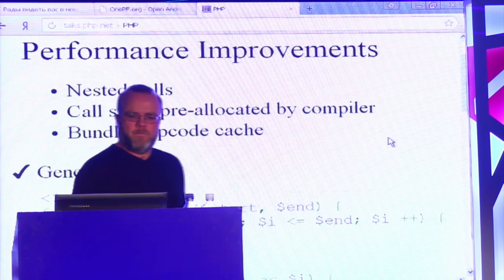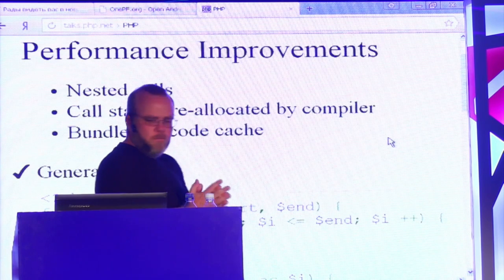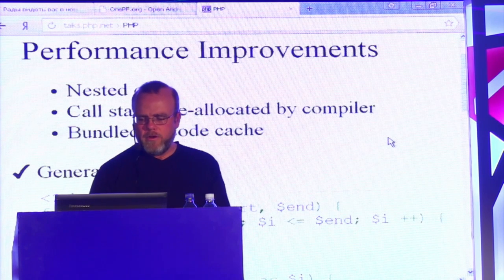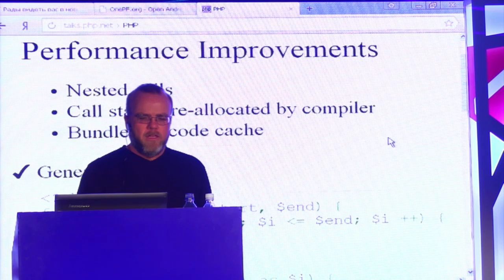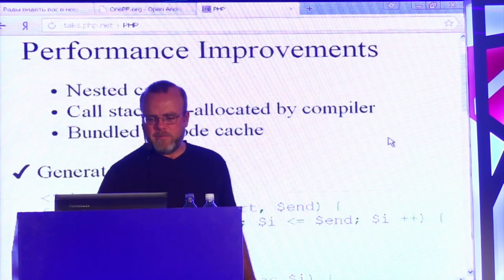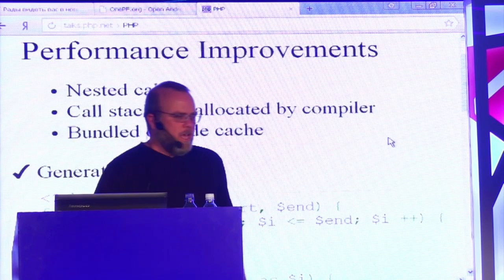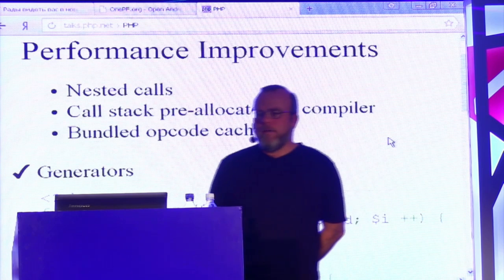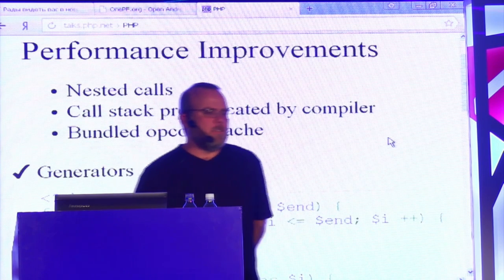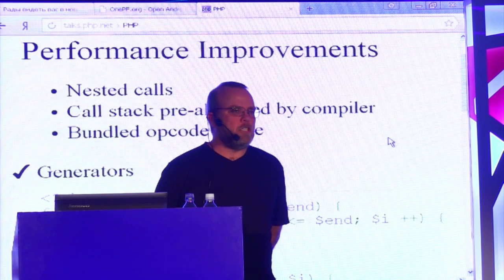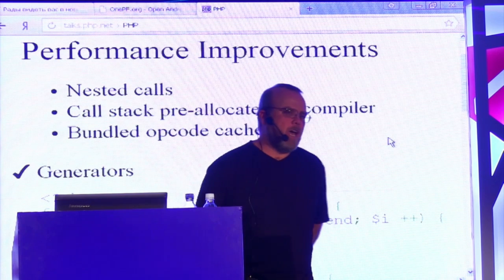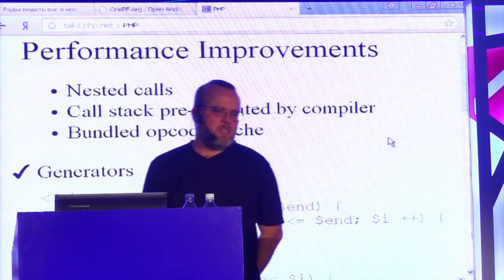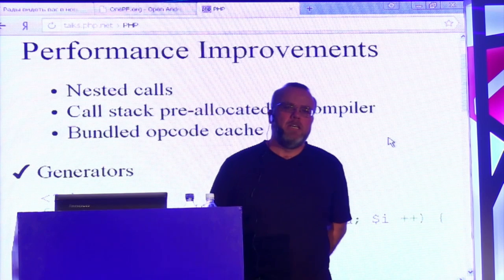In PHP 5.5 we have some performance improvements. Nested calls are a little bit quicker now, so if you have a lot of recursive things in your code, that should be quicker. We have a call stack that's pre-allocated, which makes memory management a little bit quicker. The big news in 5.5 is that we have bundled an opcode cache — Zend Optimizer Plus is now the default cache in PHP 5.5.